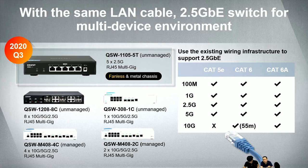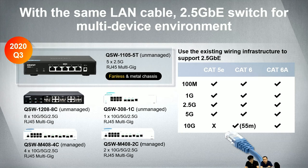QNAP is targeting this segment. Next quarter we're launching the 5-port 2.5G unmanaged switch, the QSW-1105T. It has a fanless design with a metal housing, so you can place it anywhere on your desk without any noise. This is how you can bring your current network to a higher speed with various switches.